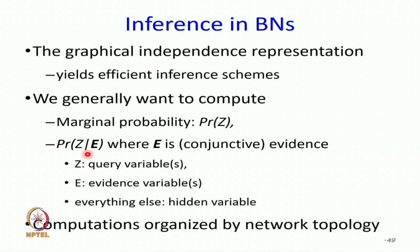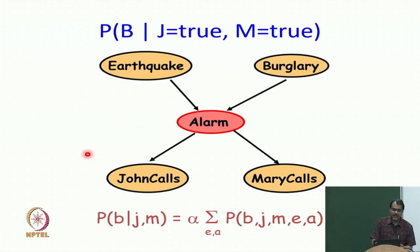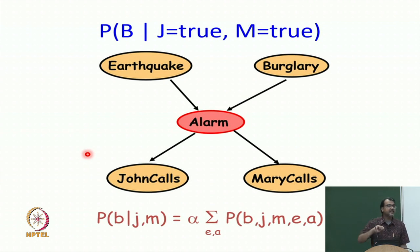The main idea and trick is that all the computations are going to be organized by network topology. Today we are going to do one such inference procedure called variable elimination, and we will also learn the general principles of how to do inference in a Bayesian network. We will do this with a specific example: what is the probability that there was a burglary given that both John called and Mary called.